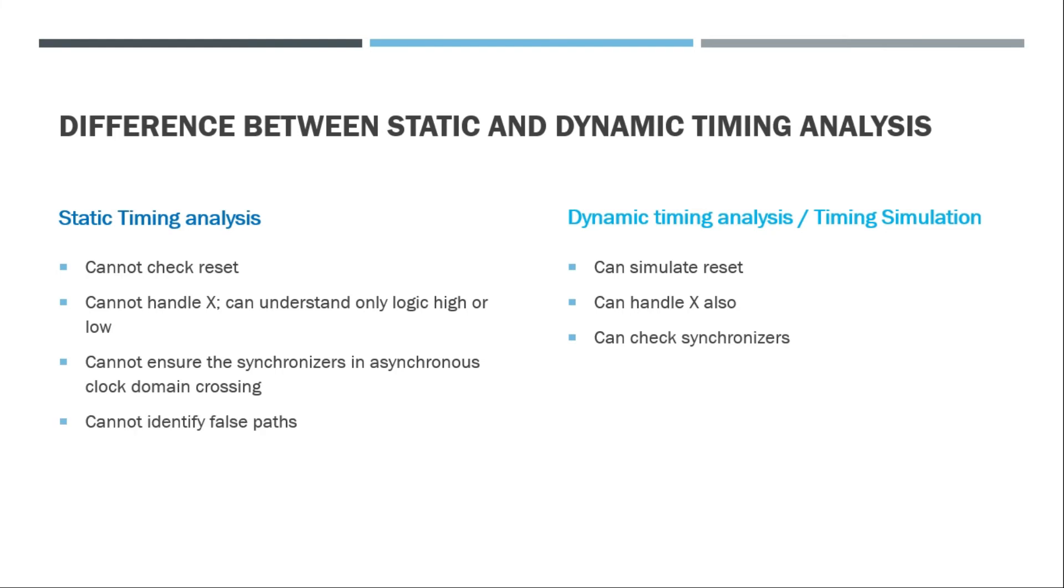Static timing analysis cannot identify the false paths. It is possible that the static timing analysis sometime flags a path as a violating path, but in fact the signal may never flow through that path. Now this is because static timing analysis identifies all paths equivalently.